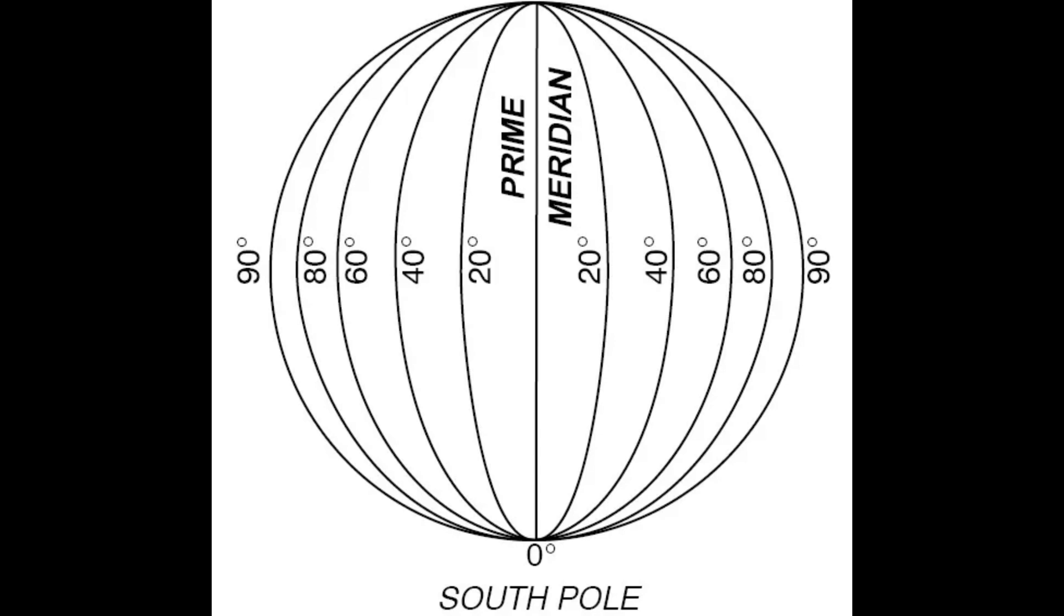All lines of longitude east of the prime meridian are indicated with the letter E to denote east of the prime meridian. Therefore, we have 15 degrees east, 30 degrees east, 45 degrees east, and so on.